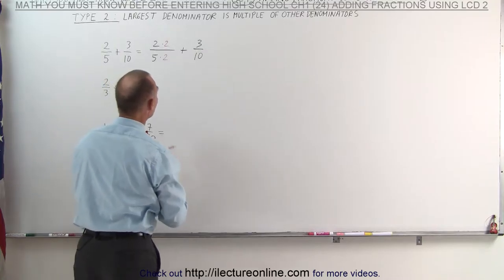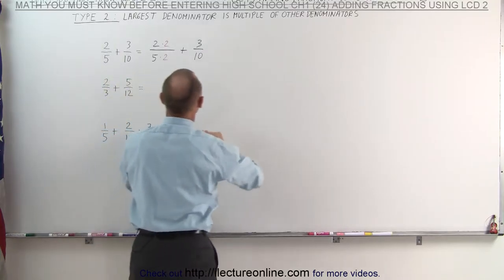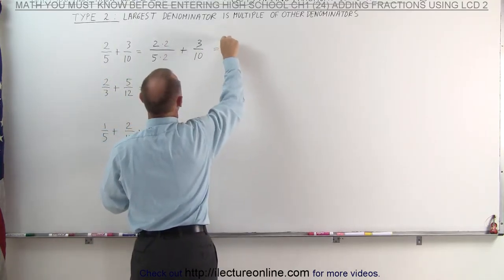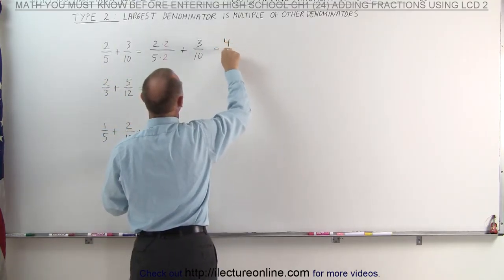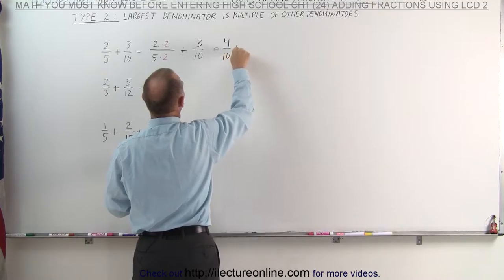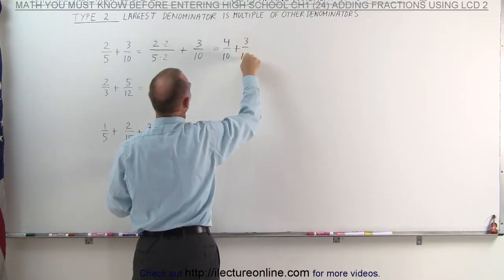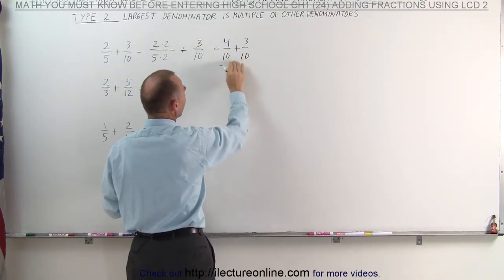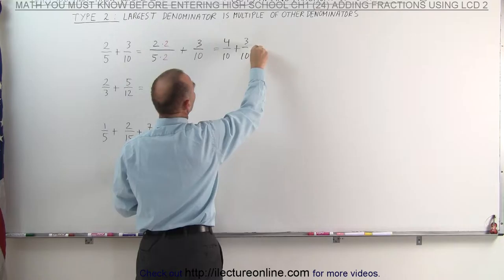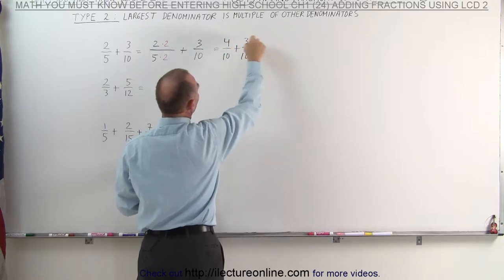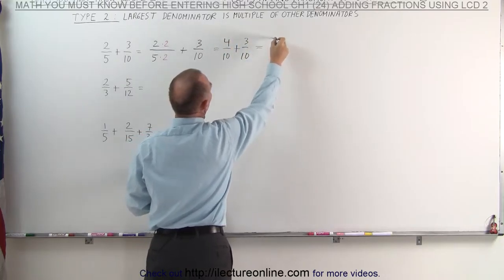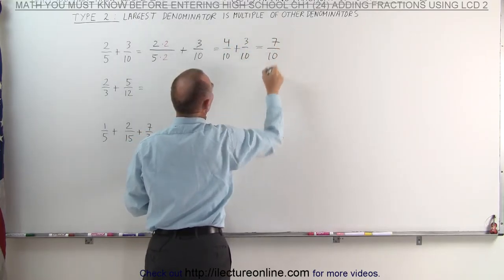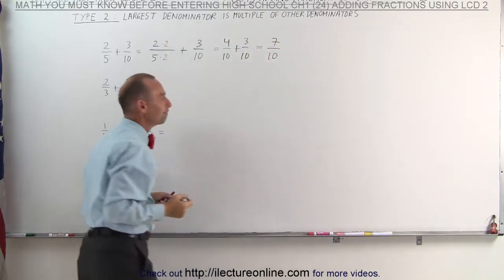The left fraction can now be written as 4 divided by 10. We add that to the other fraction, which is unchanged. Now that they have the same common denominator, we can simply add the numerators, and this becomes 7 divided by 10.